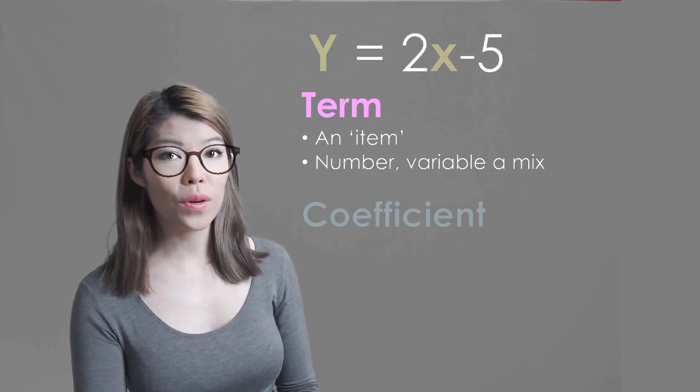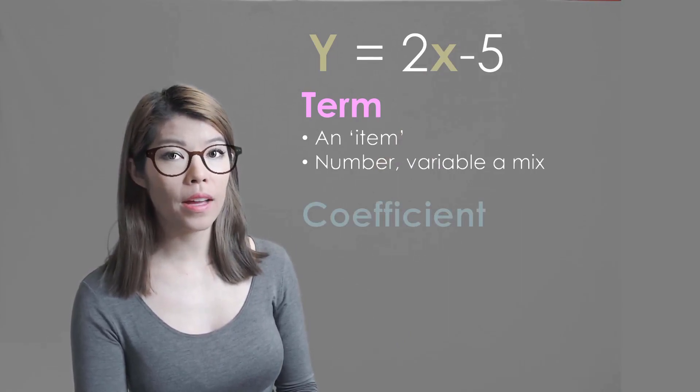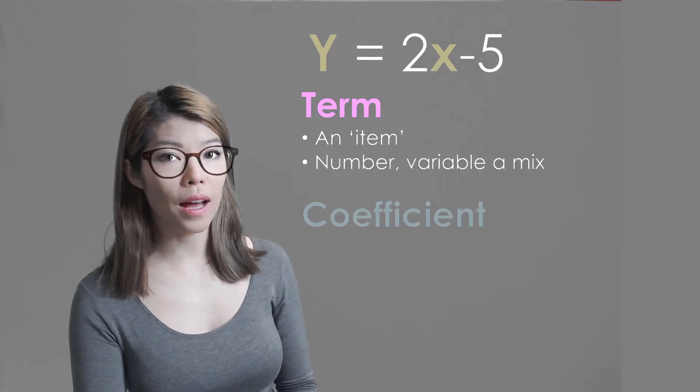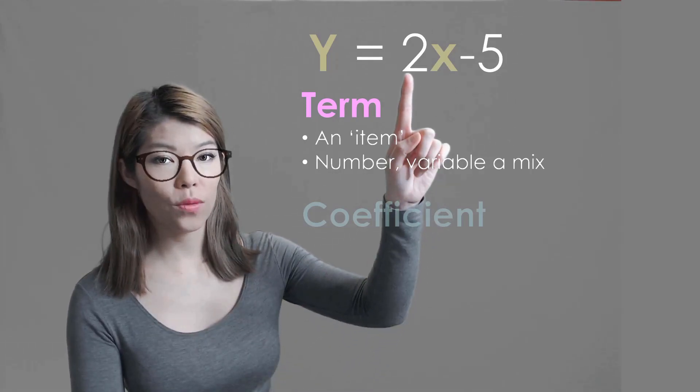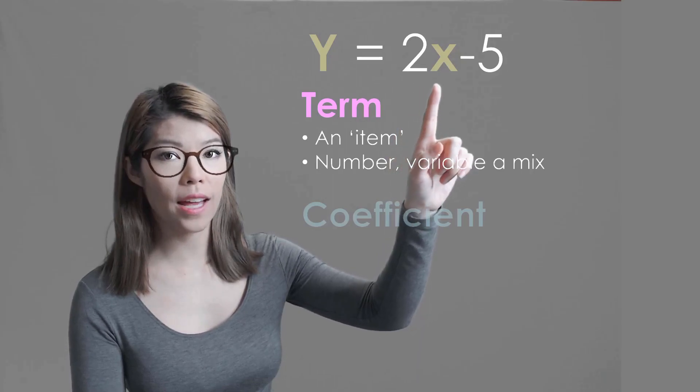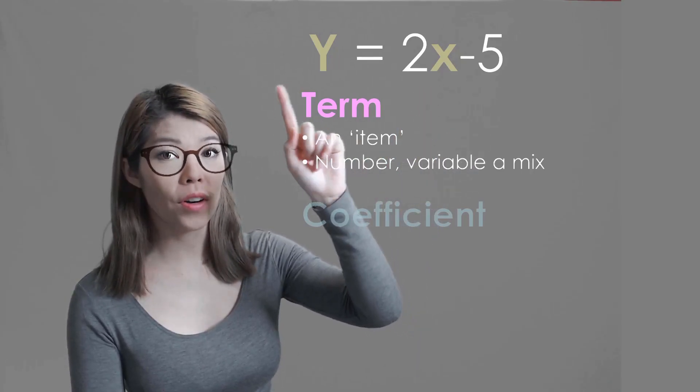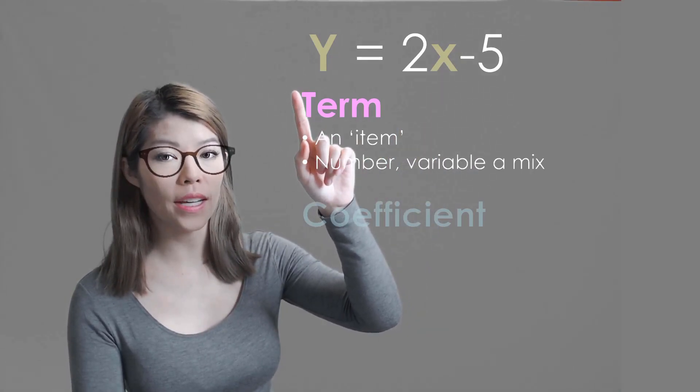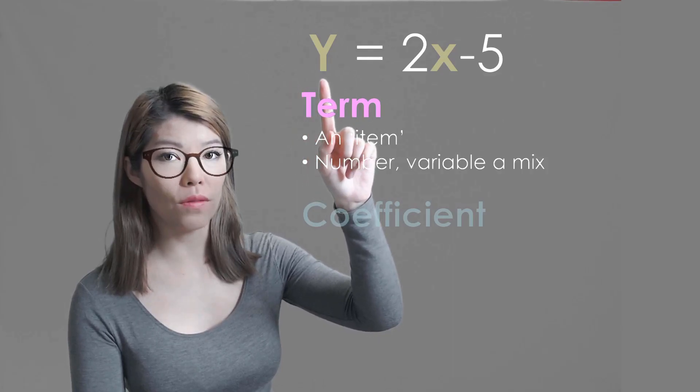The word coefficient means the number in front of a variable, so it multiplies the variable. So in this case we have 2 is a coefficient of x, and in front of y there's an invisible 1. So 1 is a coefficient of y.